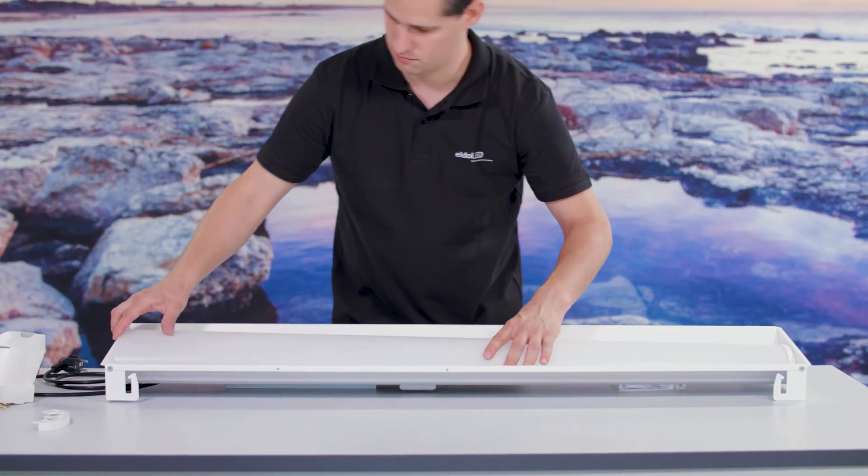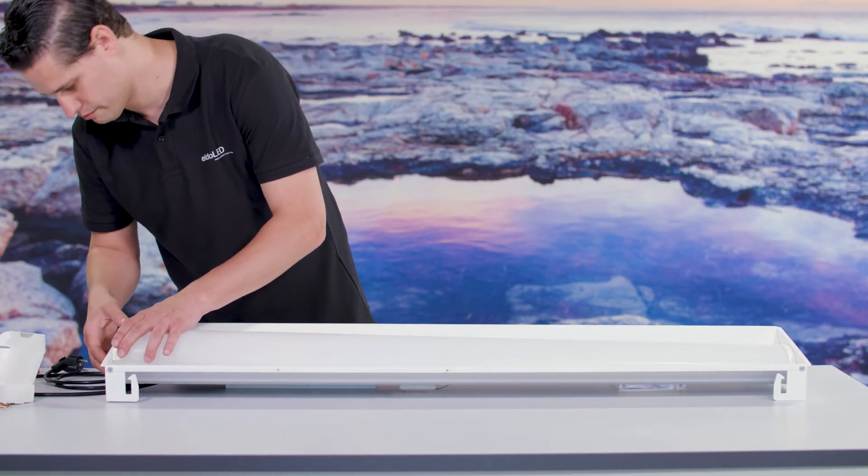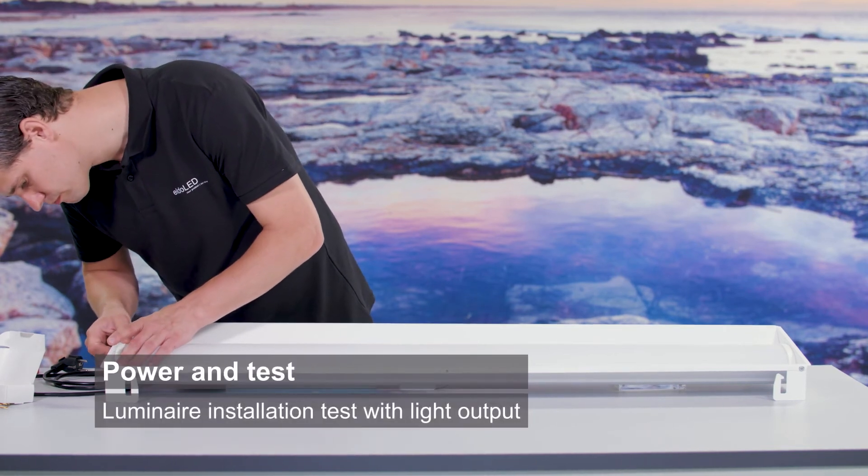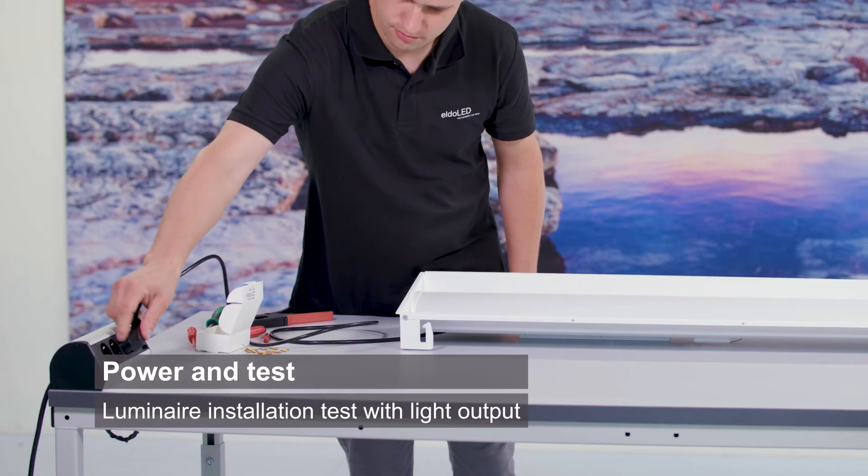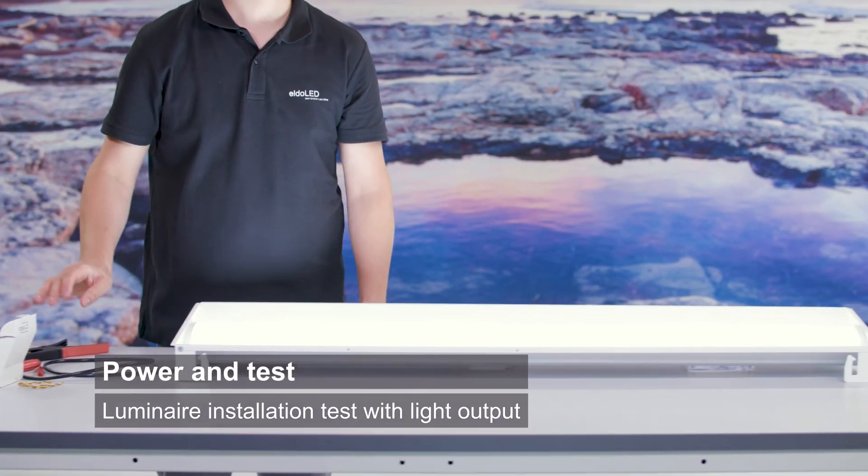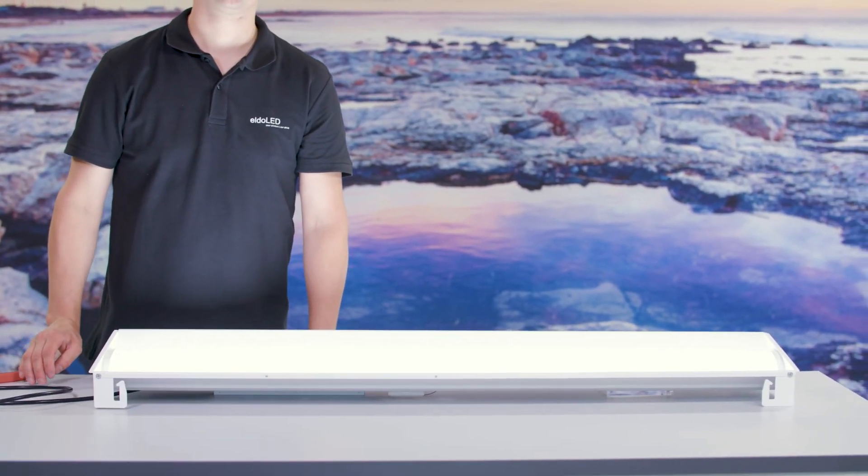Reassemble the optics back on the luminaire and connect the luminaire to a power outlet to test the light output. When it all looks good, you finish the installation of the LEDCODE BLE radio.